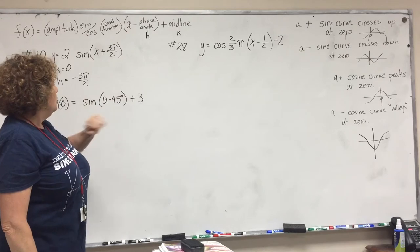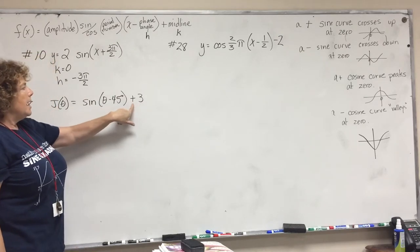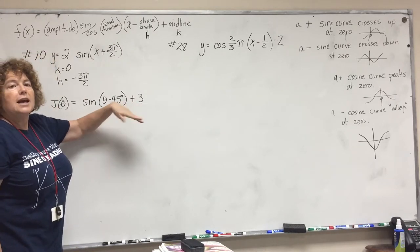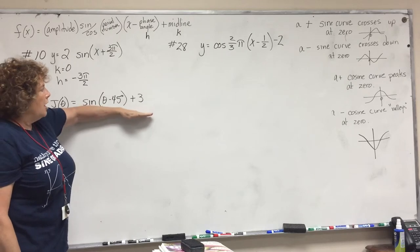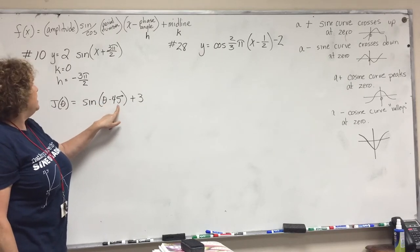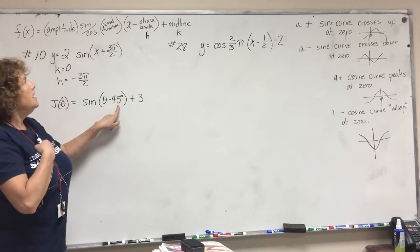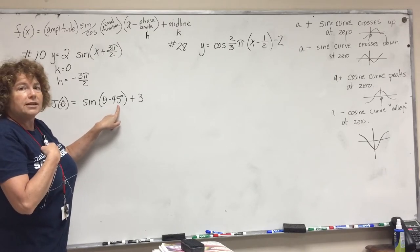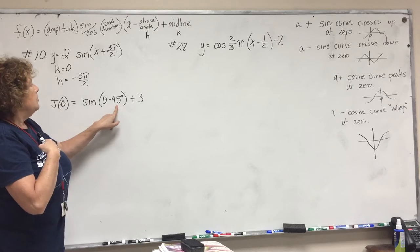Looking at this example, K would be positive 3, that means this graph is shifted up 3. This would be 45 degrees—H would be 45 degrees—which means it's shifted to the right 45 degrees.